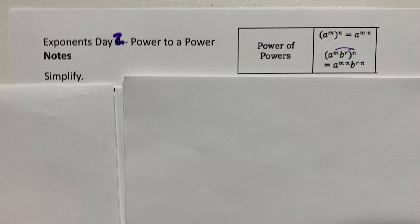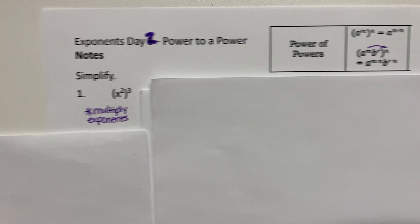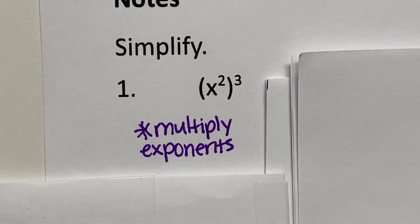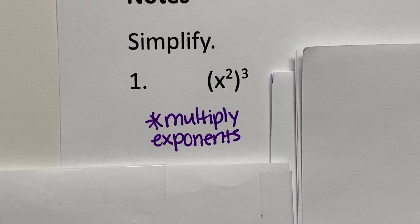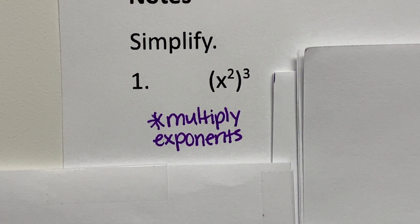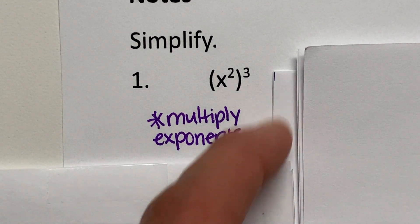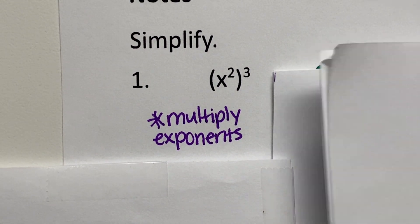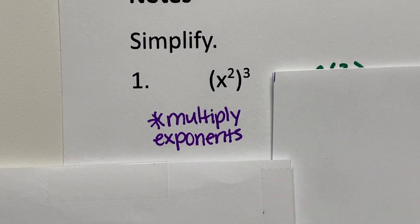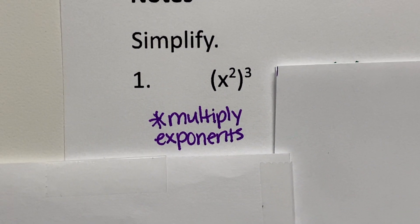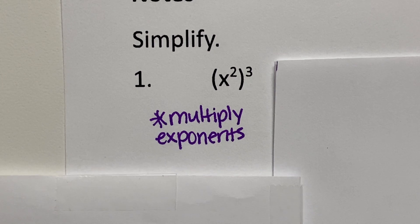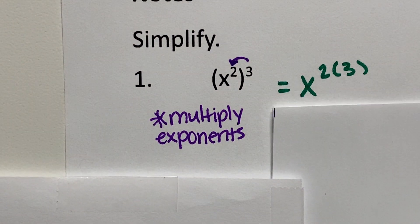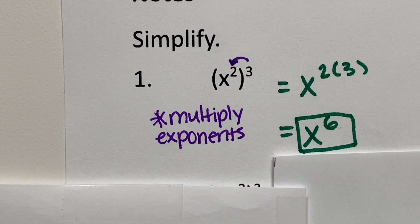Let's look at example number one. I'm going to go ahead and zoom in. In the first example, we have x squared, and all of this is raised to the third power. You're going to multiply the exponents — this is no longer addition because you are not multiplying the bases. It's the power to a power rule: take three and multiply it with two. The answer is x to the sixth power.